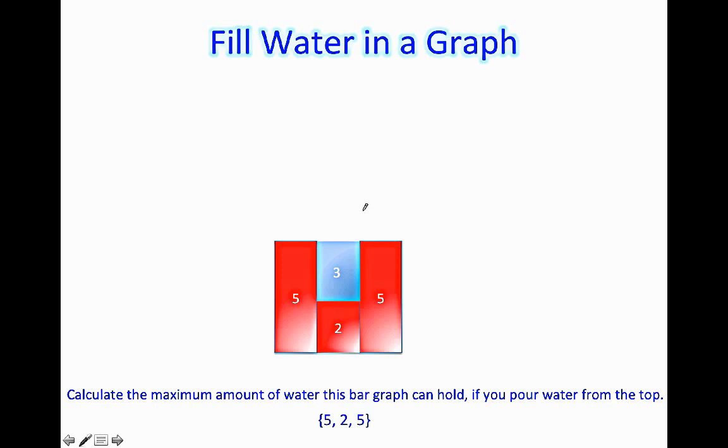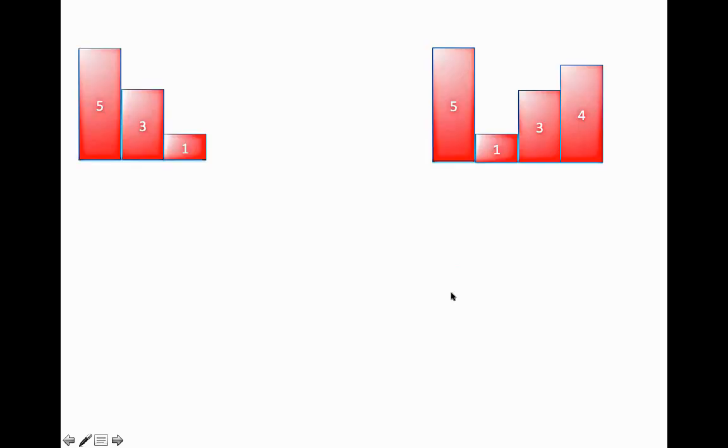As you can see this graph holds three units of water, ignoring the breadth and the depth for simplicity. So can you calculate how much water the graph to the left and the one to the right will hold?